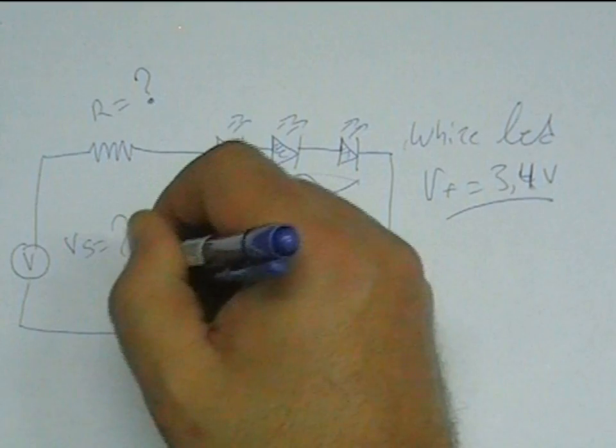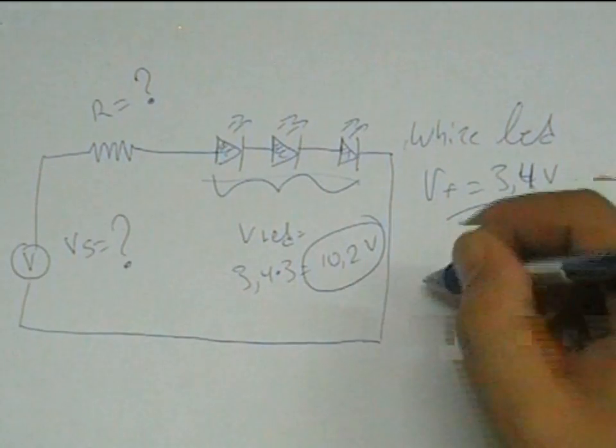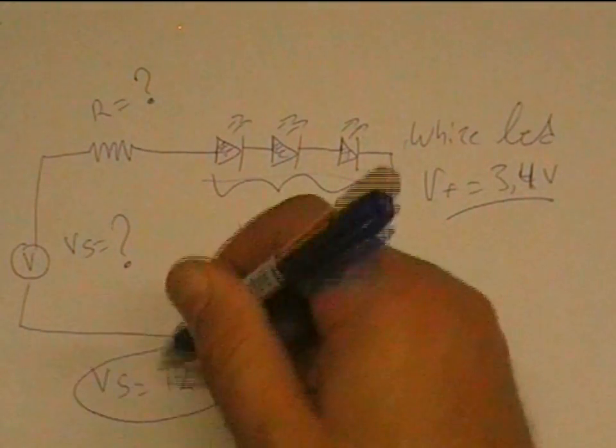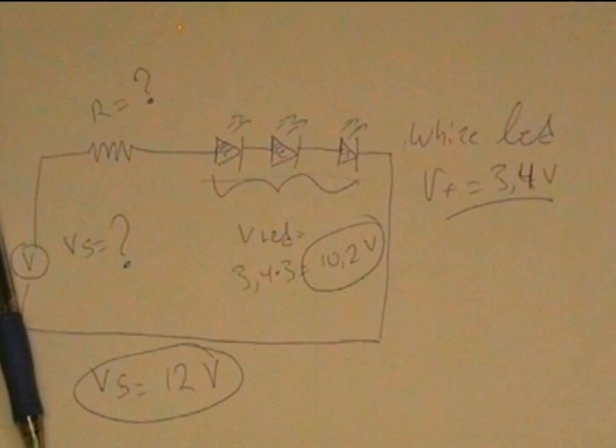Now we need to determine the power source voltage. It has to be of course higher than the total LED voltage. So we choose a typical source of 12 volts.